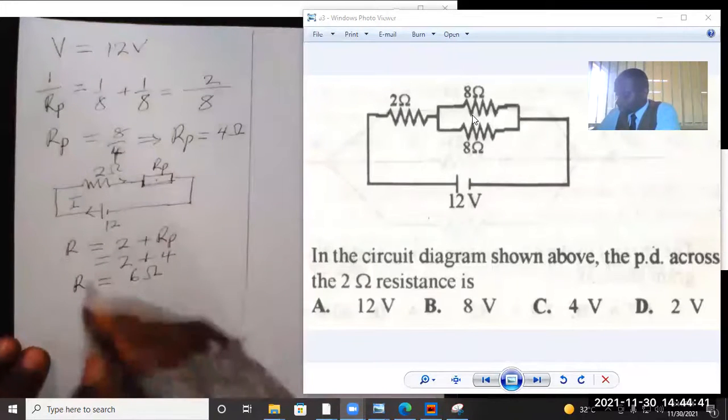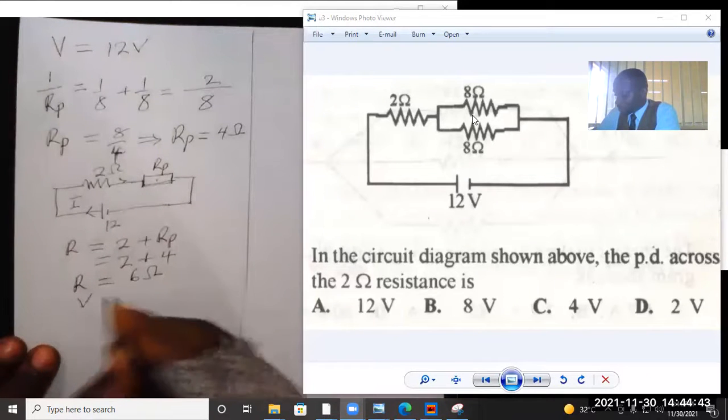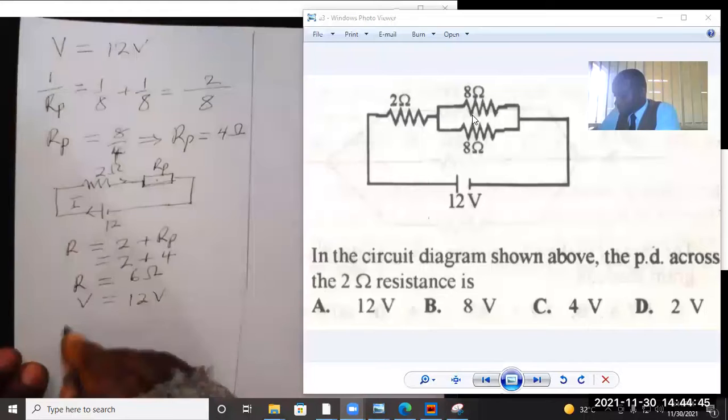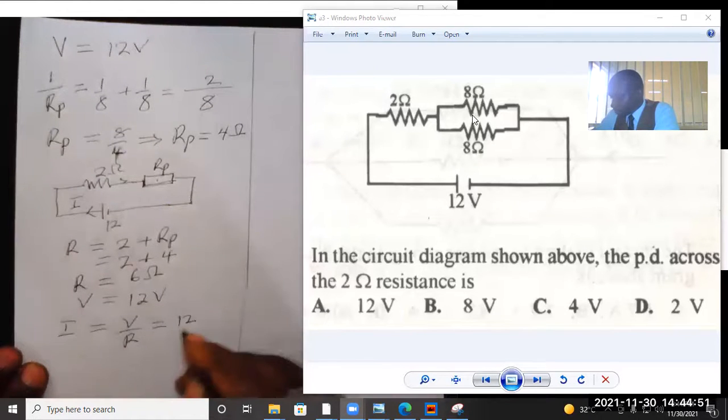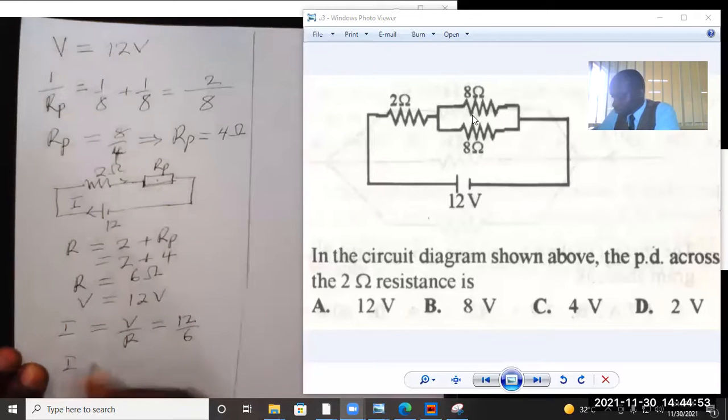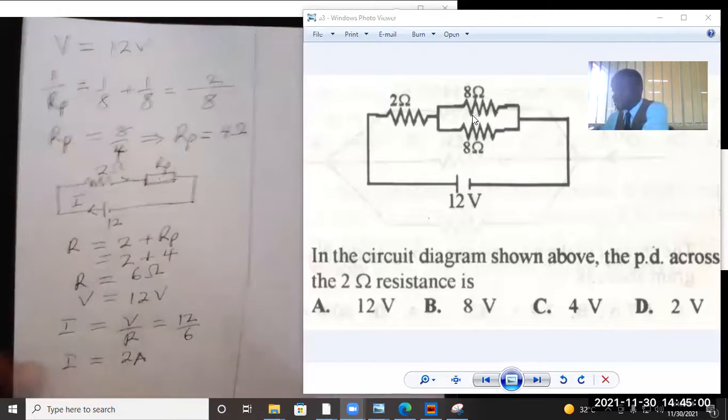Remember the voltage source is 12 volts. So using Ohm's law, the main current flowing in the circuit, V over R is 12 volts over 6. That current should be 2 ampere. That means 2 amps flowing in the circuit.